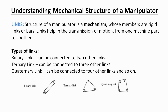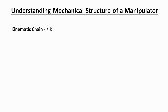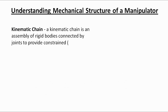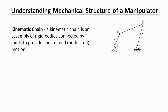A point to be noted here is that the binary links are represented by a straight line. There is another term: kinematic chain. A kinematic chain is the assembly of links or rigid bodies connected by joints to provide the desired motion. A simple kinematic chain is shown over here. This kinematic chain has three links — A, B, and C — connected together by the joints B and C. So this chain is the assembly of the rigid bodies.